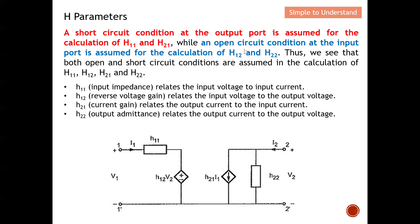When the input is left as an open circuit, we are able to calculate H12 and H22, as illustrated at the end of this video. Thus we see that both open and short circuit conditions are assumed in the calculation of H11, H12, H21, and H22. H11 is also known as input impedance — it relates the input voltage to the input current, so voltage over current gives us impedance.